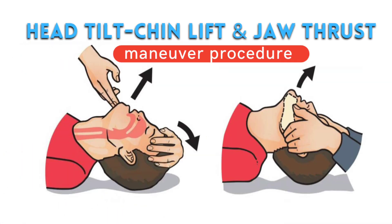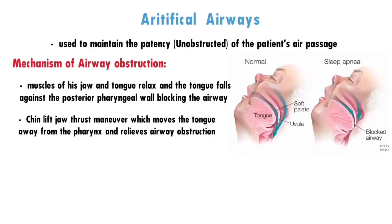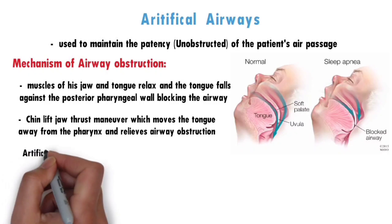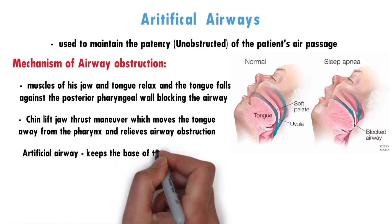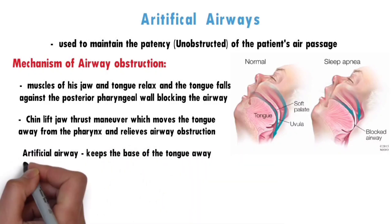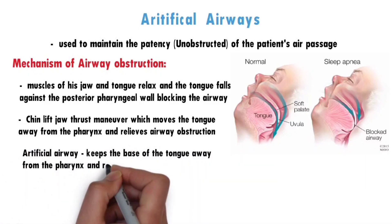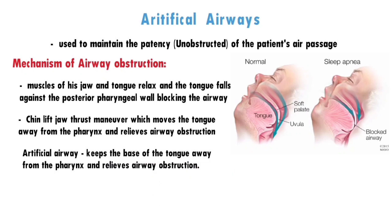I have already posted a detailed video about the Chin Lift Jaw Thrust Maneuver — if you have not watched that video, do watch it. One of the most effective ways to maintain the patency of the airway is by inserting an artificial airway, because it keeps the base of the tongue away from the pharynx and relieves airway obstruction.